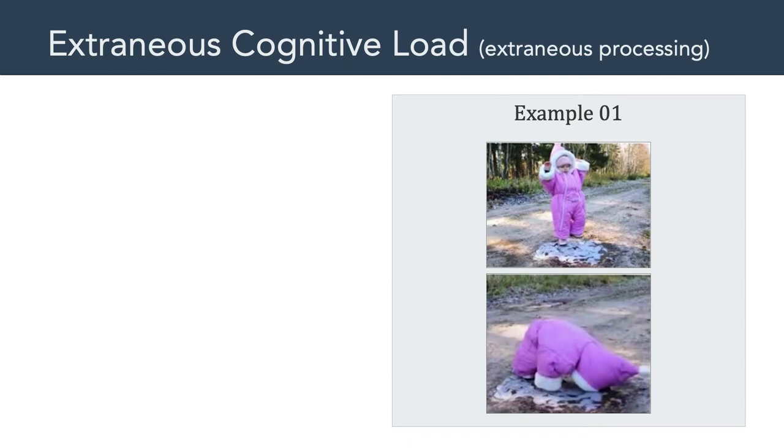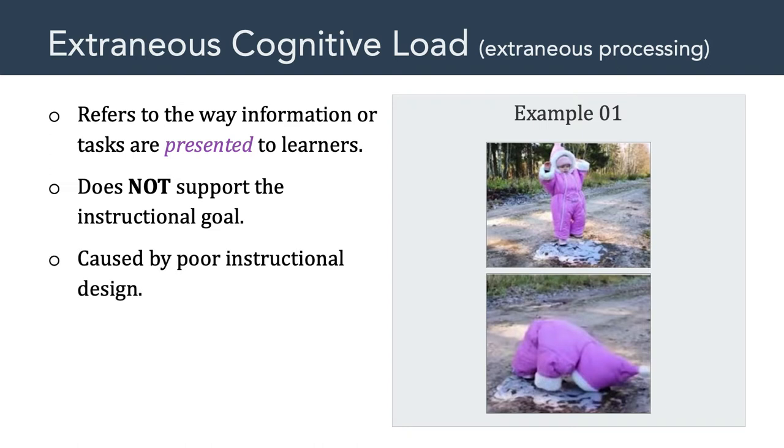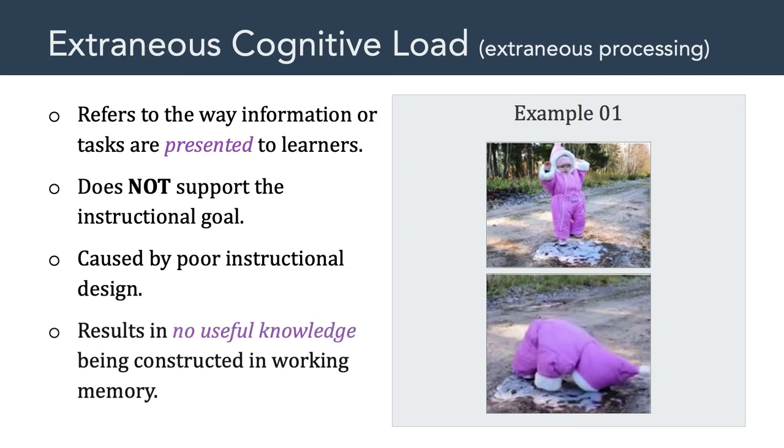Now, let's talk about the second kind of cognitive load, and that's extraneous cognitive load. And, that has to do with the way information or tasks are presented to learners. Extraneous cognitive load is unwanted processing because it does not support the instructional goal of learning the material. Extraneous cognitive load can be caused by poor instructional design. And, even though there's processing of poor instructional design, that results in no useful knowledge being constructed in working memory.